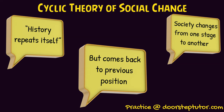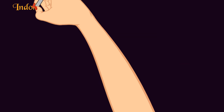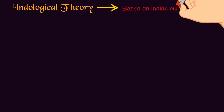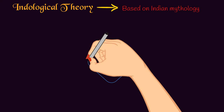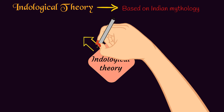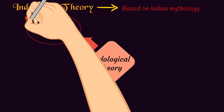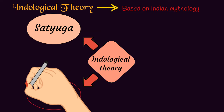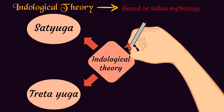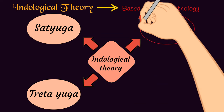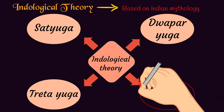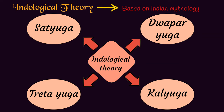The next theory is the endological theory, which is based on Indian mythology. It starts with Satyug, goes to Treta Yug, then Dwapar Yug, and then comes Kal Yug. And after Kal Yug, again we go back to Satyug and the cycle proceeds like this.